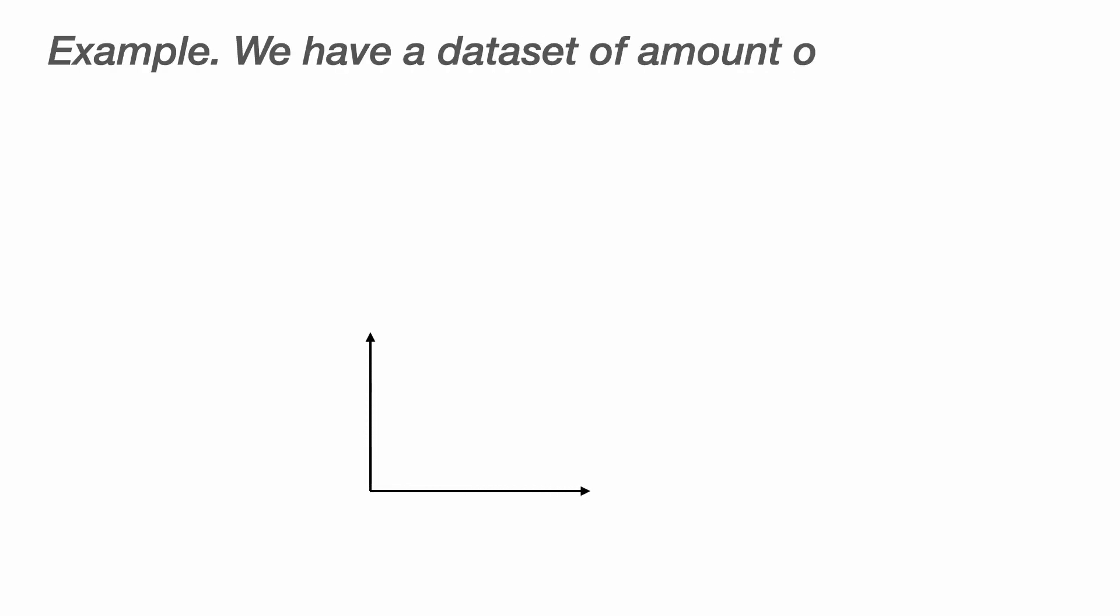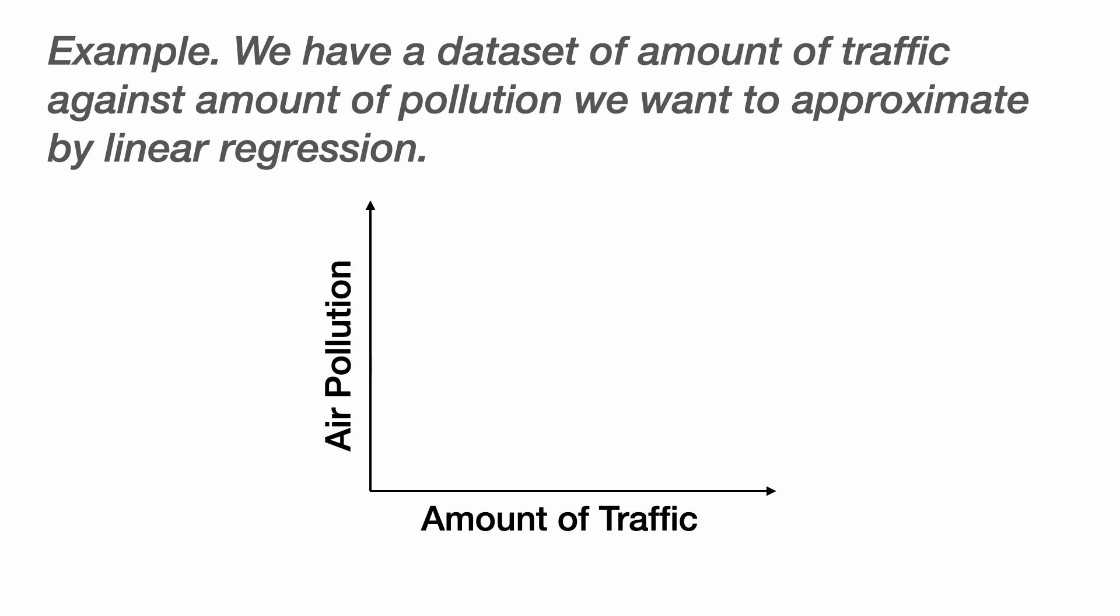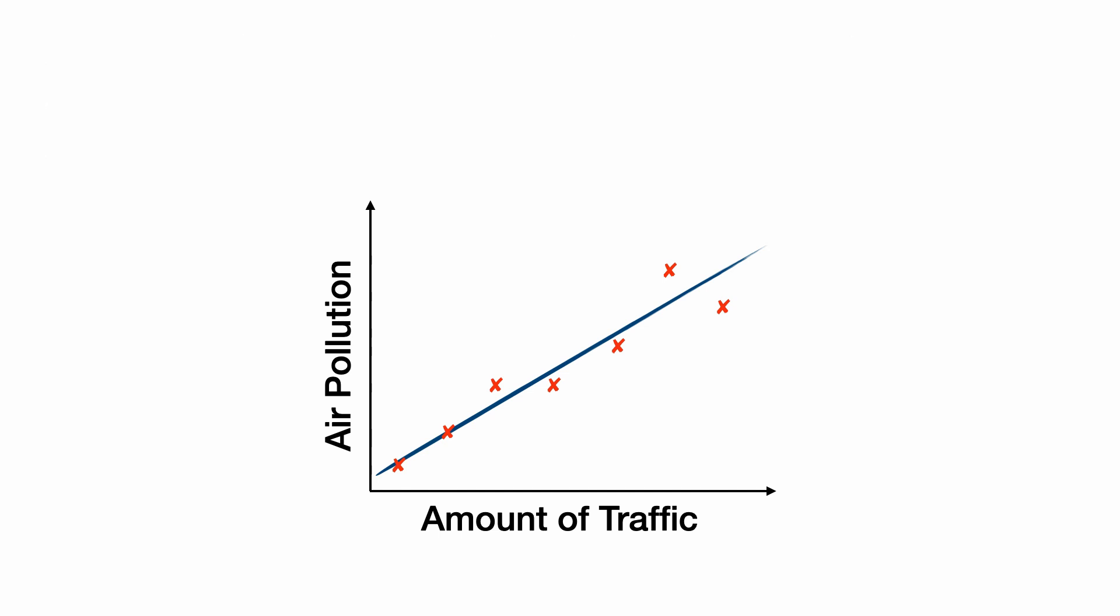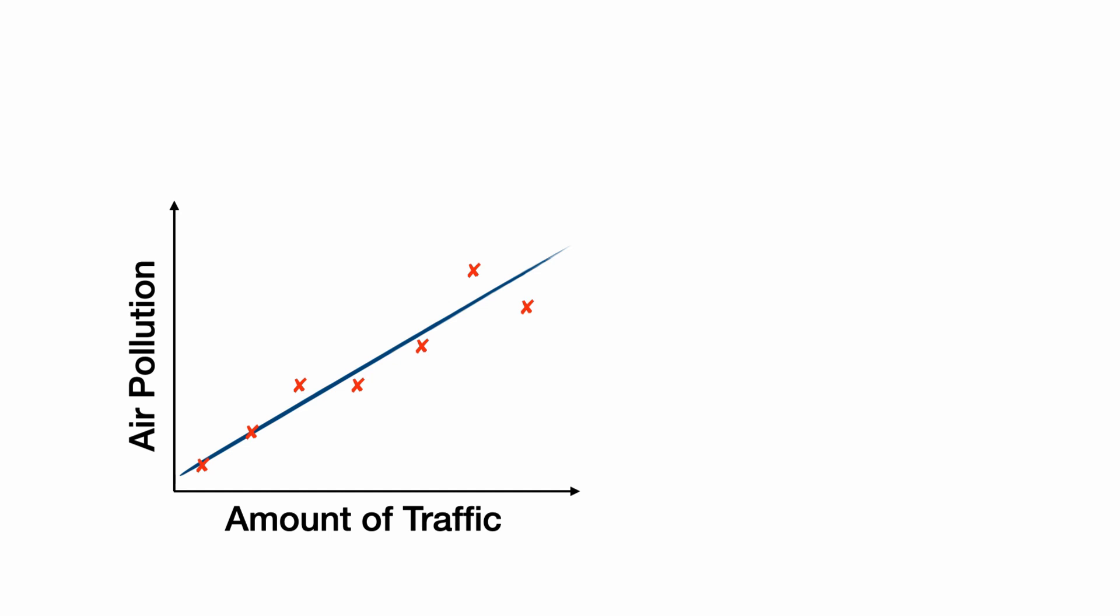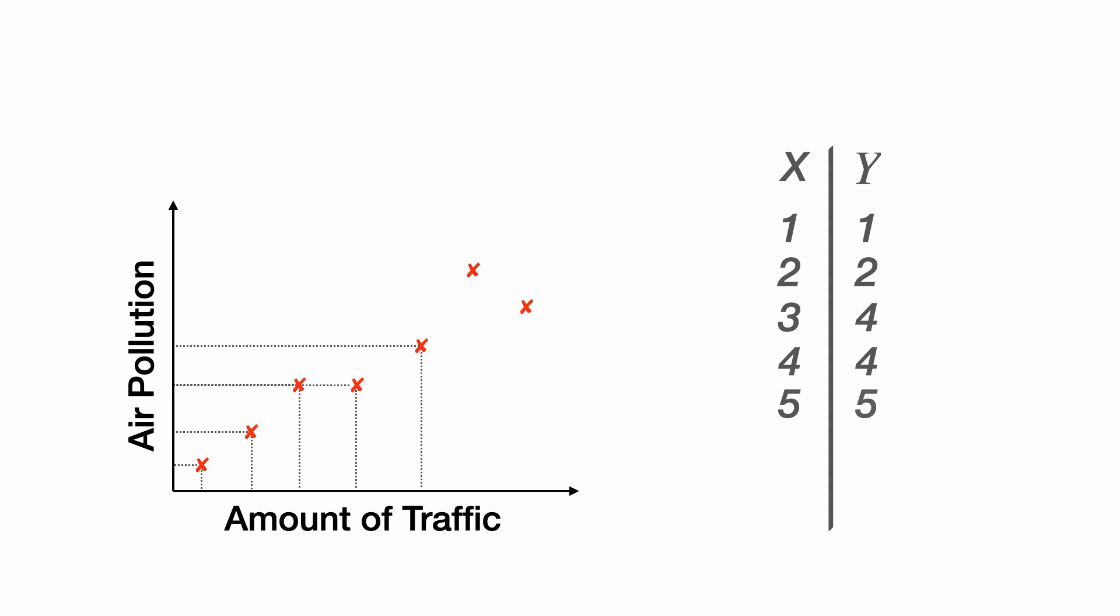Let's take an example from the world of data science. Imagine we have a data set where we're looking at the amount of traffic in different areas and the amount of air pollution in those areas. This is made-up data, but let's imagine there's a linear correlation between these two variables we can model using linear regression, or a line of best fit. I'm going to take these data points and put them into a table. For every data point, we have an amount of traffic in the X column, and an amount of air pollution in the Y column.